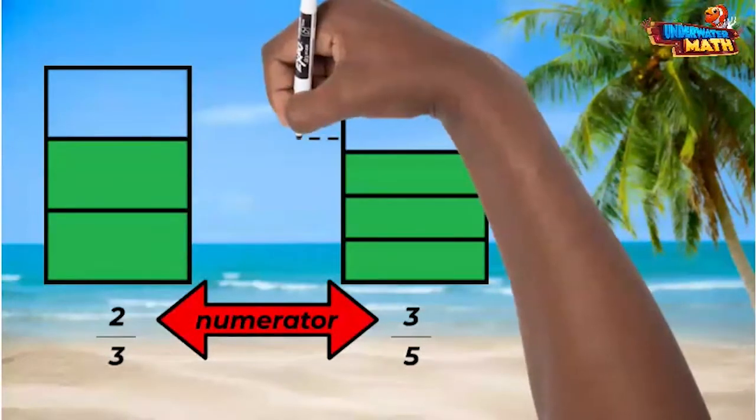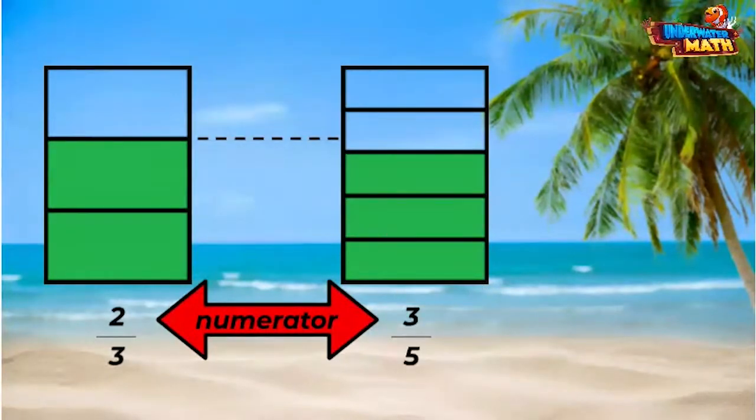Which one has the most shading? It looks like two-thirds has more shading than three-fifths. That's right!